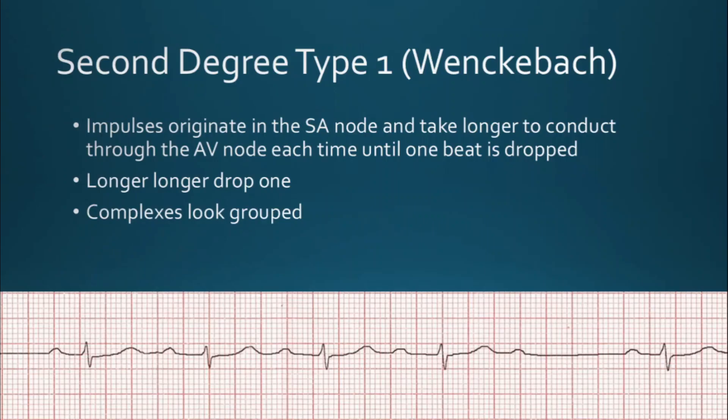A second degree type 1 AV block occurs when there is a varying failure of impulses making it to the AV node. There is not a 1-to-1 QRS ratio, so there is polyuria — an excessive amount of P waves. This rhythm is unique in that there is a consistent delay in P wave conduction until a P wave does not conduct a QRS complex. The PR interval progressively lengthens until a QRS complex is dropped: longer, longer, drop — that's your second degree type 1.